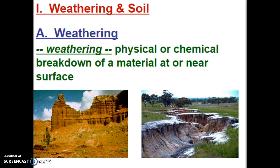In our last unit, we discussed how the rock cycle can continuously form and change rocks on the surface. Weathering plays a part in the rock cycle because it breaks down material at or near the surface to make large sediments into smaller sediments. So weathering can be either a physical or chemical breakdown of material at or near the surface.